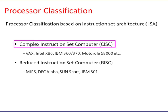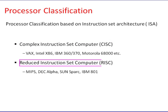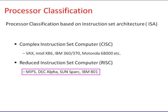Both CISC and RISC have different design strategies. MIPS, SPARC, PowerPC, and Alpha AXP are RISC ISAs. RISC design strategies include fixed instruction length, few instruction formats, and load-store architecture.